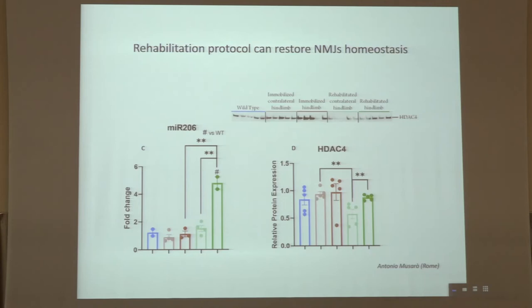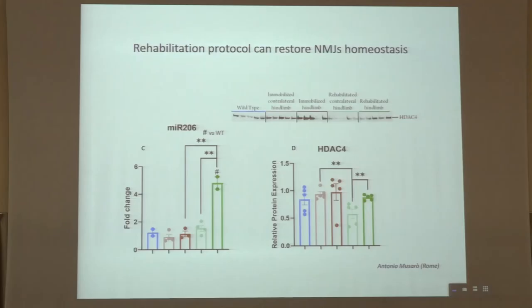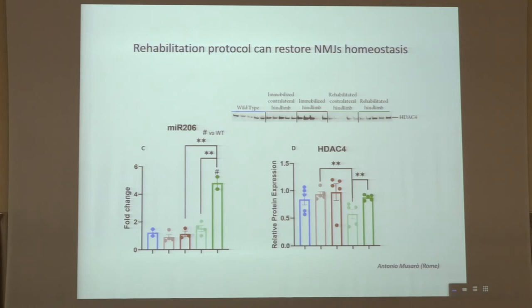Antonio Musaro further addressed this issue by evaluating two players involved in denervation and re-innervation. One is miR-206, a muscle-specific miRNA involved in re-innervation events regulating neuromuscular junction homeostasis, which was upregulated in rehabilitated muscles. Consistently, its downstream target HDAC4 was downregulated in rehabilitated muscles, indicating that the neuromuscular junction destabilized in immobilized muscles is somehow re-stabilized by the upregulation of miR-206 and downregulation of HDAC4.